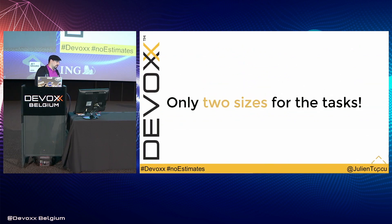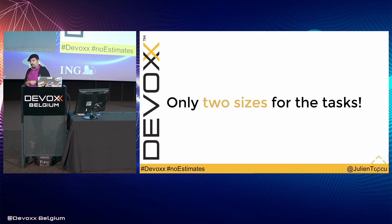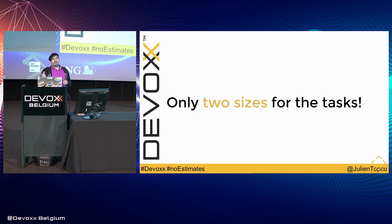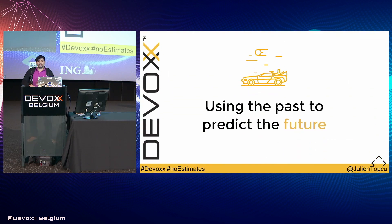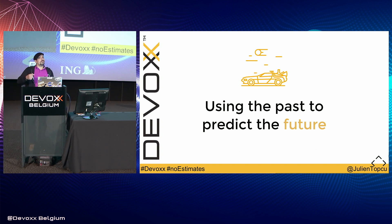Now we can measure something called the throughput — the number of tasks delivered each week. If you're delivering five tasks a week and have a backlog of ten tasks, you can say you'll finish in two weeks. But we know we'll do a bit more or a bit less — usually less. So how can we simulate that evolution of cycle time? We use something called the Monte Carlo method using Bootstrap, which uses the past evolution of cycle time to predict the future release date of our backlog.